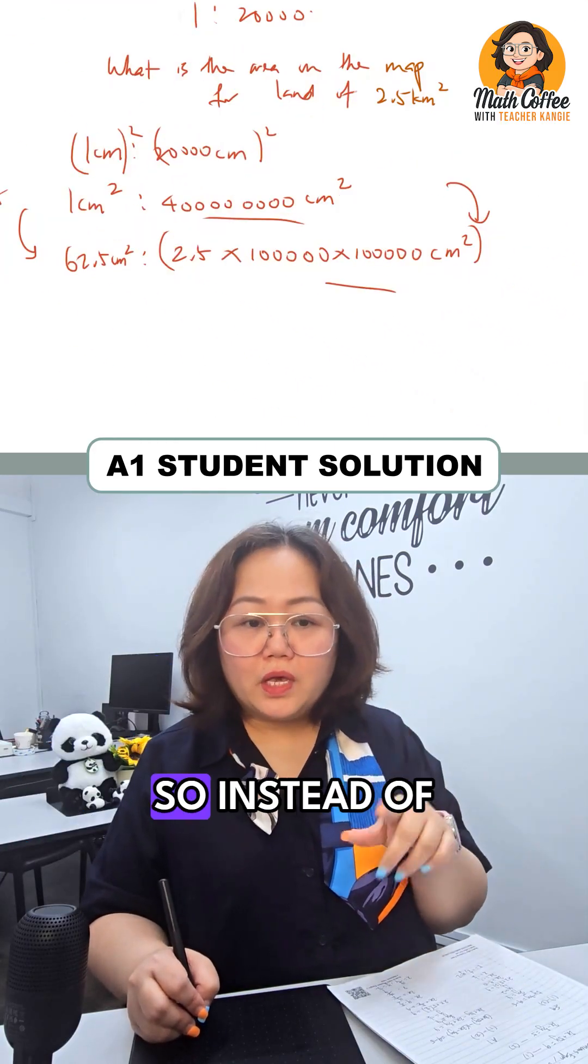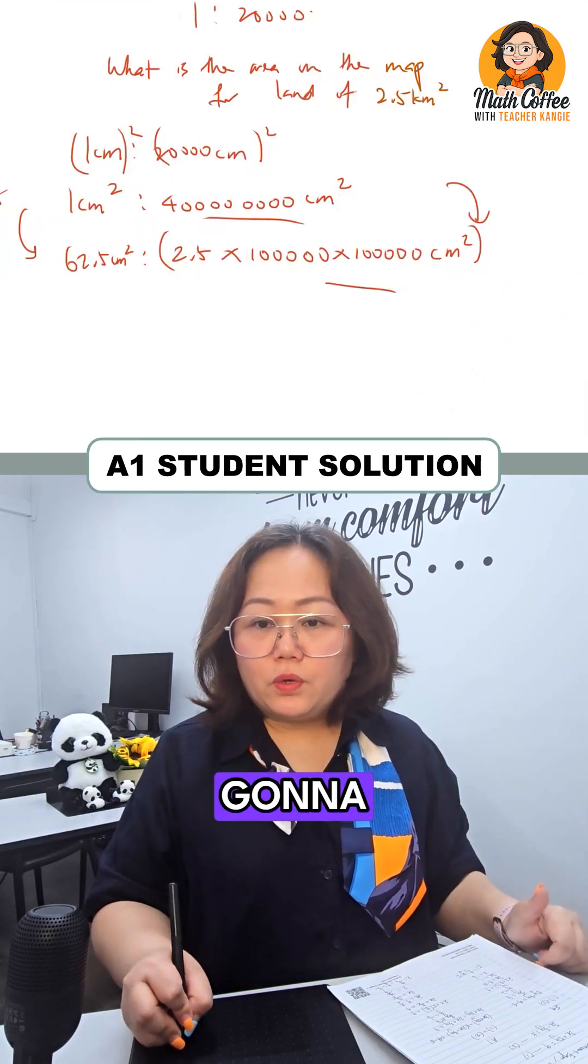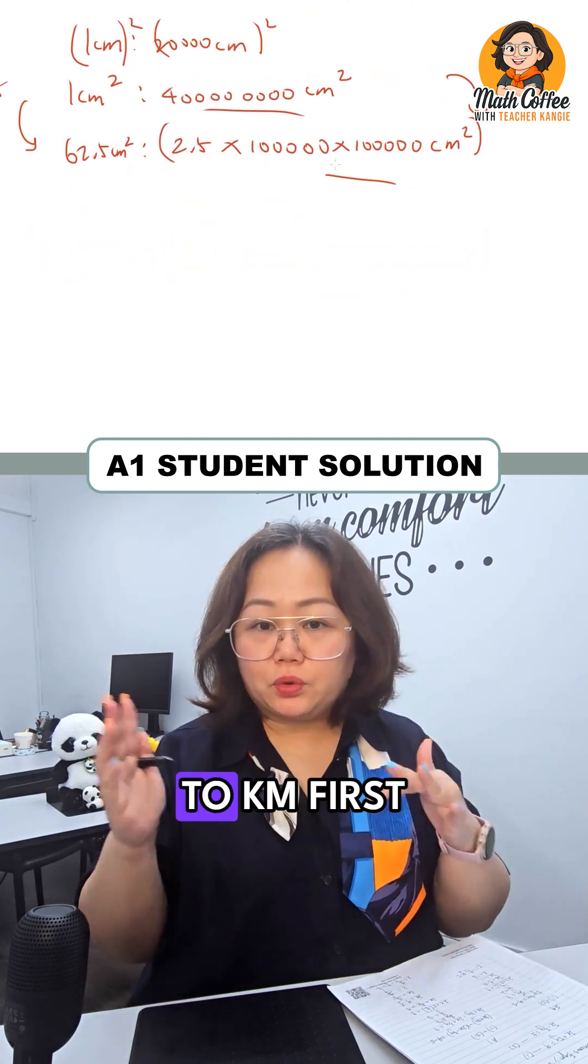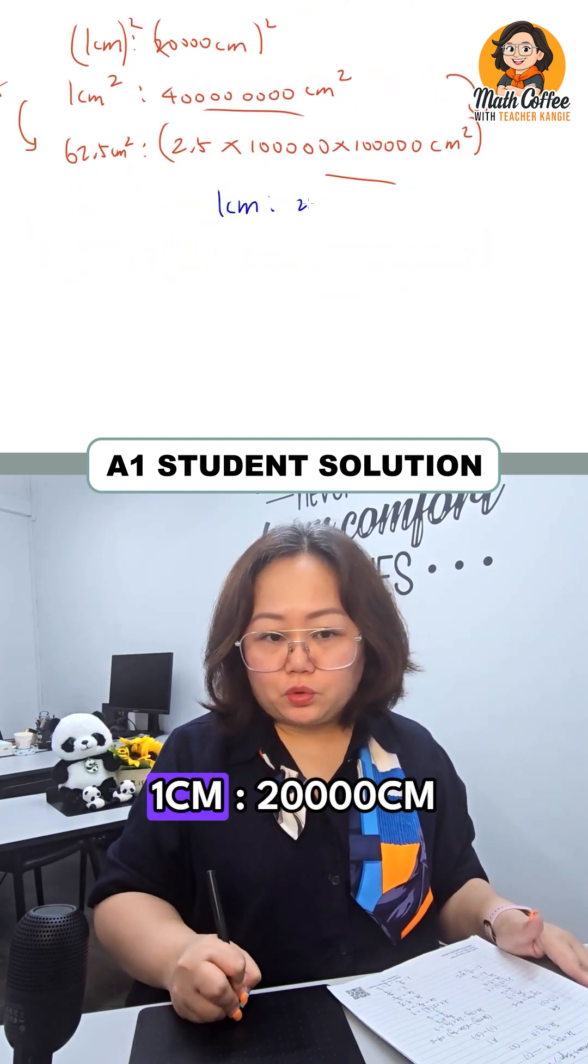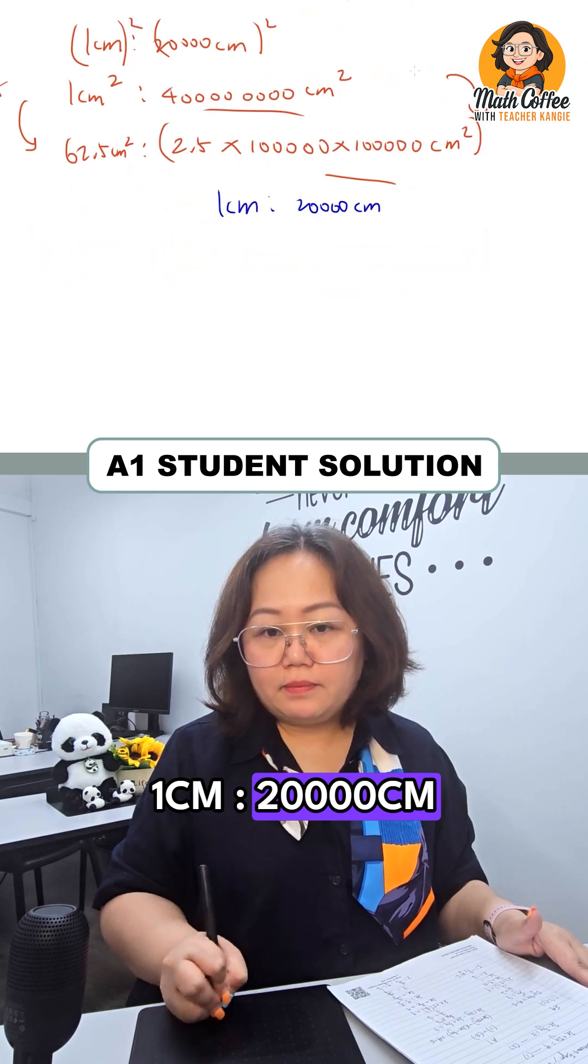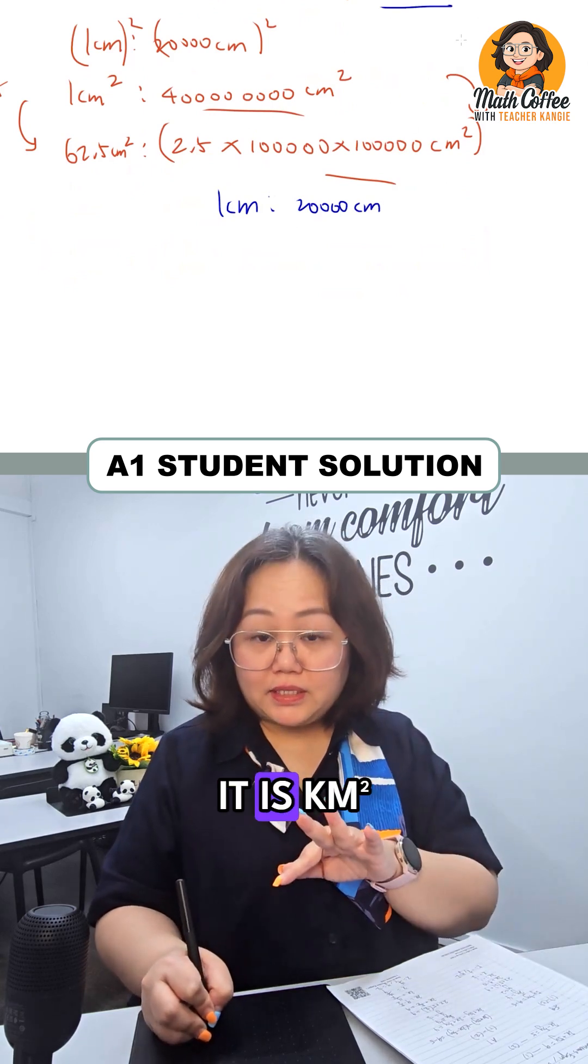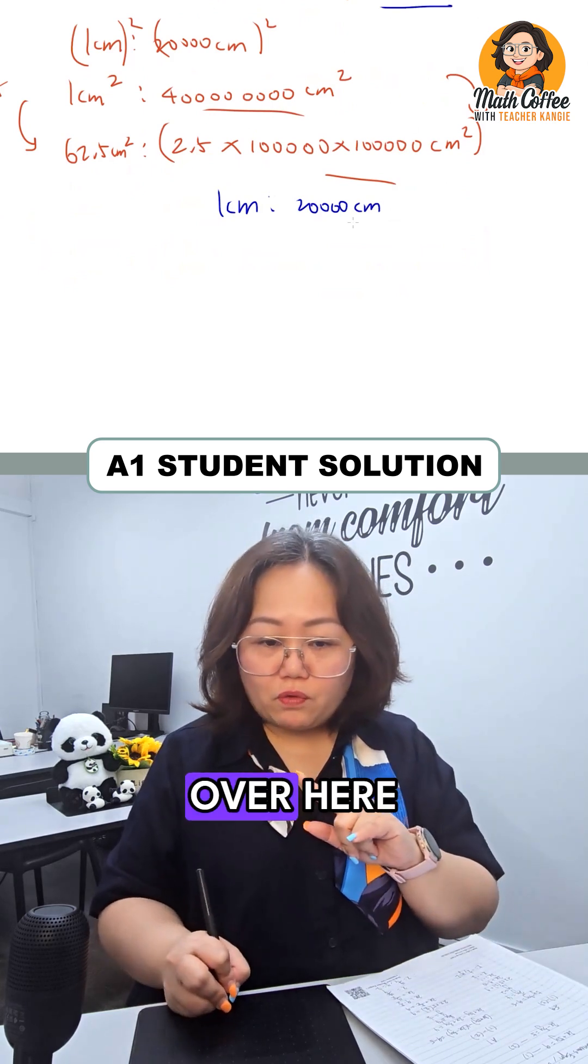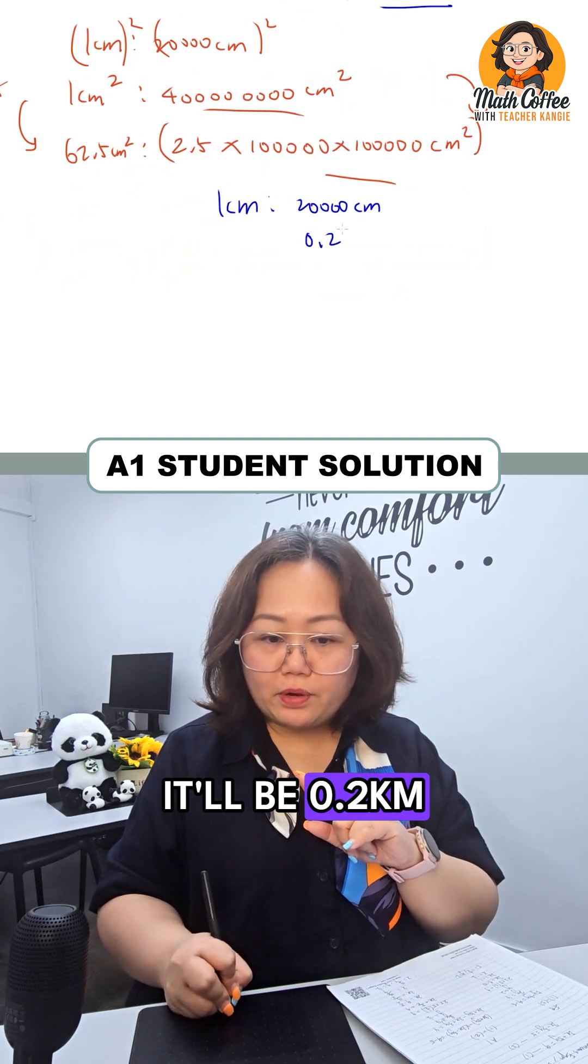If you want to get A1, here is what you should do. Instead of so many zeros, we're going to change the right hand side to km first. So 1 cm is to 20,000 cm. Since it's km squared, we're going to change it. So over here it will be 0.2 km.